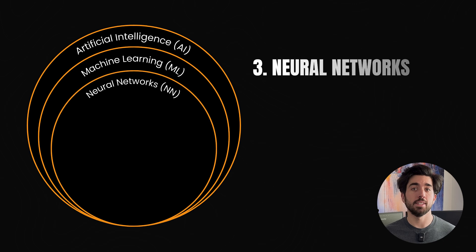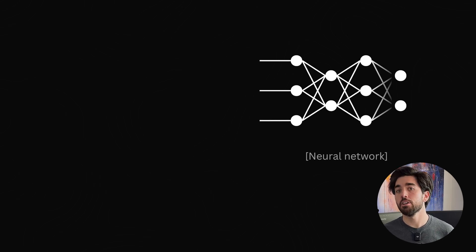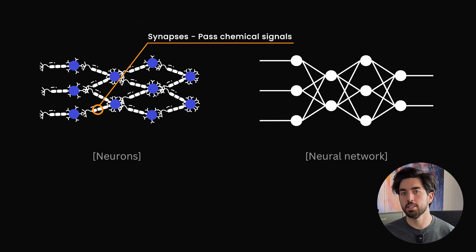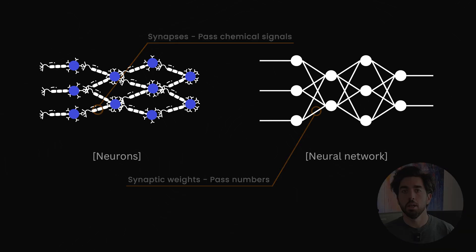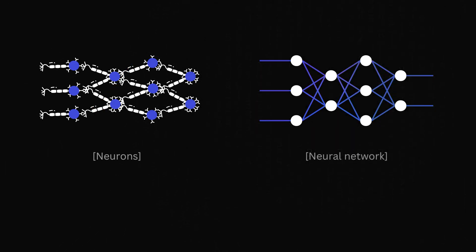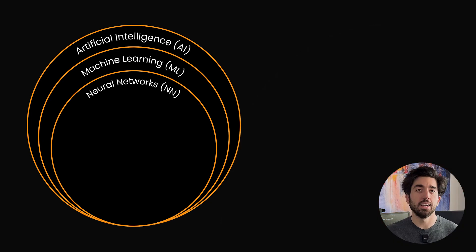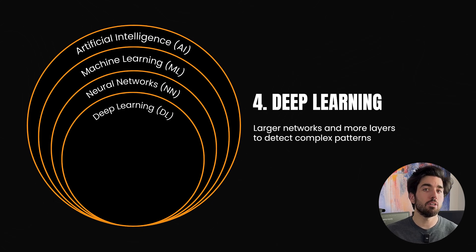Inside machine learning, there's this concept of neural networks, which are very loosely inspired by how the human brain works. Imagine a network of small units — we call them neurons — that are connected to each other. In the human brain, neurons pass signals to each other through connections called synapses. In an artificial neural network, these neurons pass numbers to each other, compared to chemicals and current for our brain. By tuning those connections with billions of examples, the network learns to perform a task, just like babies learn from observing and playing with things. Deep learning just means we are using really big networks with a lot of layers of neurons, so they can detect more complicated patterns.